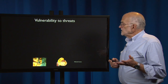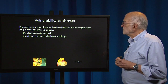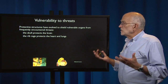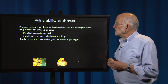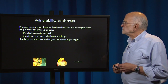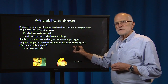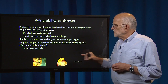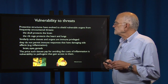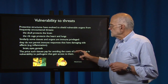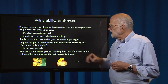Then there is vulnerability to threats. Protective structures have evolved to shield vulnerable organs from frequently encountered threats — the skull protects the brain, the rib cage protects the heart and lungs. Some tissues and organs are immune-privileged; here we have pictures of a couple of them. They don't permit immune responses that have damaging side effects, such as inflammation. So the brain, eyes, and gonads are all immune-privileged and do not inflame easily when infected. However, a price is paid: by avoiding the cost of inflammation, they make themselves vulnerable to pathogens that can get into them.